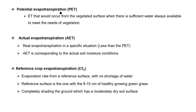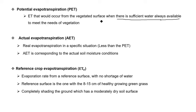There are different terminology to designate evapotranspiration. Potential evapotranspiration means the evapotranspiration that would occur from a vegetative surface when there is sufficient water always available to meet the needs of vegetation — when the surface has sufficient water for that crop or vegetation.